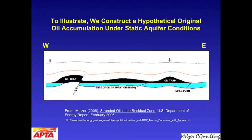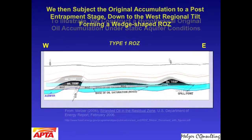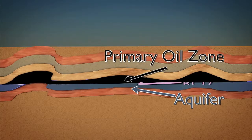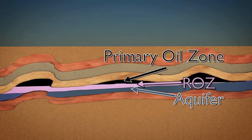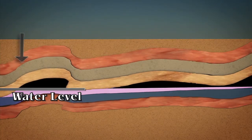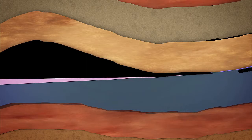In this first slide, we have a hypothetical original entrapment that might have been formed many ages ago in the geologic past. In the case of this first type of ROZ, we're going to tilt the left side — what we call the west side — of this hypothetical trap downward and actually move oil out of the trap, displacing a wedge of that pore space with water.